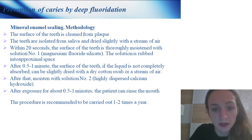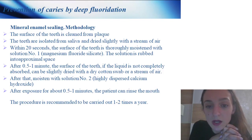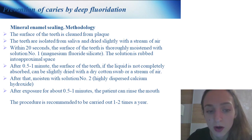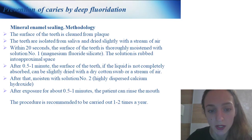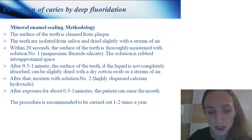Mineral enamel sealing procedure: clean the surface of teeth from plaque, isolate from saliva, and dry slightly with a stream of air. Within 20 seconds, the surface of the teeth is thoroughly moistened with solution number one. After half to one minute, if the liquid is not completely absorbed, the surface can be slightly dried with a dry cotton swab or stream of air. After that, solution number two is applied with exposure of about half to one minute. The patient can then rinse. The procedure is recommended one to two times a year.